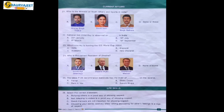Question 22: National Girl Child Day is observed on which date in India? Options are 24th January, 16th July, 8th March, 18th September. National Girl Child Day is observed on 24th January in India. So option A, 24th January, is correct.